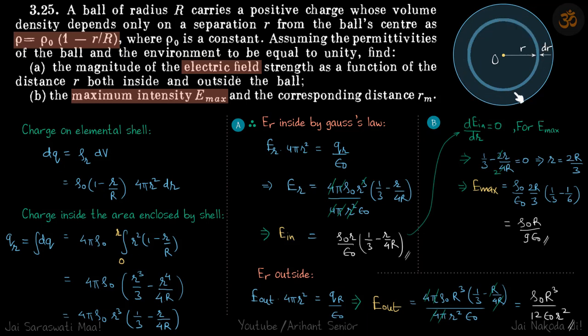So on this surface then we will calculate the field by Gauss's law. So E_r into 4 pi r squared is equal to q by epsilon naught.